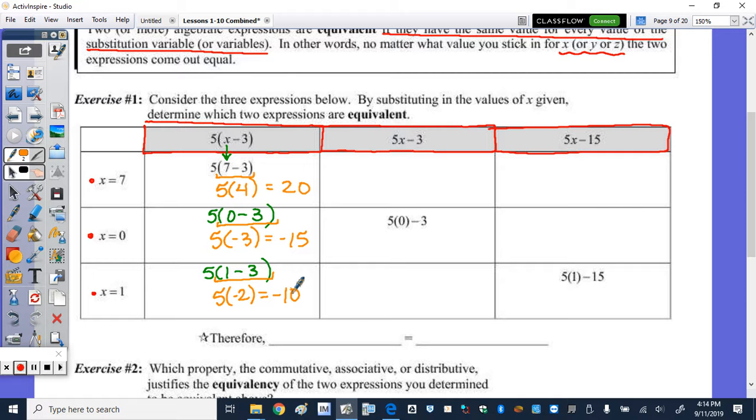So those are our values we get when we substitute. In the next column, we're going to, for x, plug in, again, first the 7. So this is 5 times 7, then minus 3. I've already plugged in the 0 in that row. And then we've got 5 times 1 minus 3.